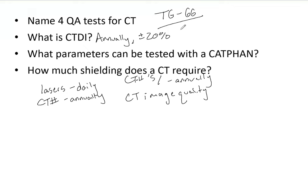The numbers are so small that a very small difference can make a big percentage difference. For example, CTDI for a TrueBeam cone beam at my clinic was just measured at 4.1 milligray — something insanely small. So if I measure 3.9 milligray, in the grand scheme of radiation therapy that difference is nothing. But percentage-wise, that's a decent-sized percentage. That's why the tolerance is 20%.